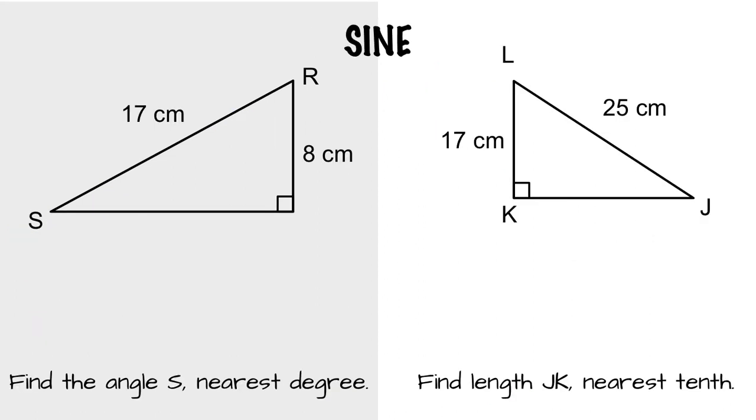And now our sine examples. We're going to find the angle at S to the nearest degree. Sine is SOH or opposite over hypotenuse.